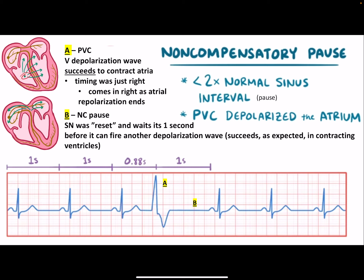A non-compensatory pause starts the same way with a premature ventricular contraction, but the timing is such that it travels into the atria and effectively resets everything. So now we just wait a normal beat's worth — about 0.88 seconds — and the interval from this P wave to the next is less than two times the normal sinus interval. That's a non-compensatory pause.